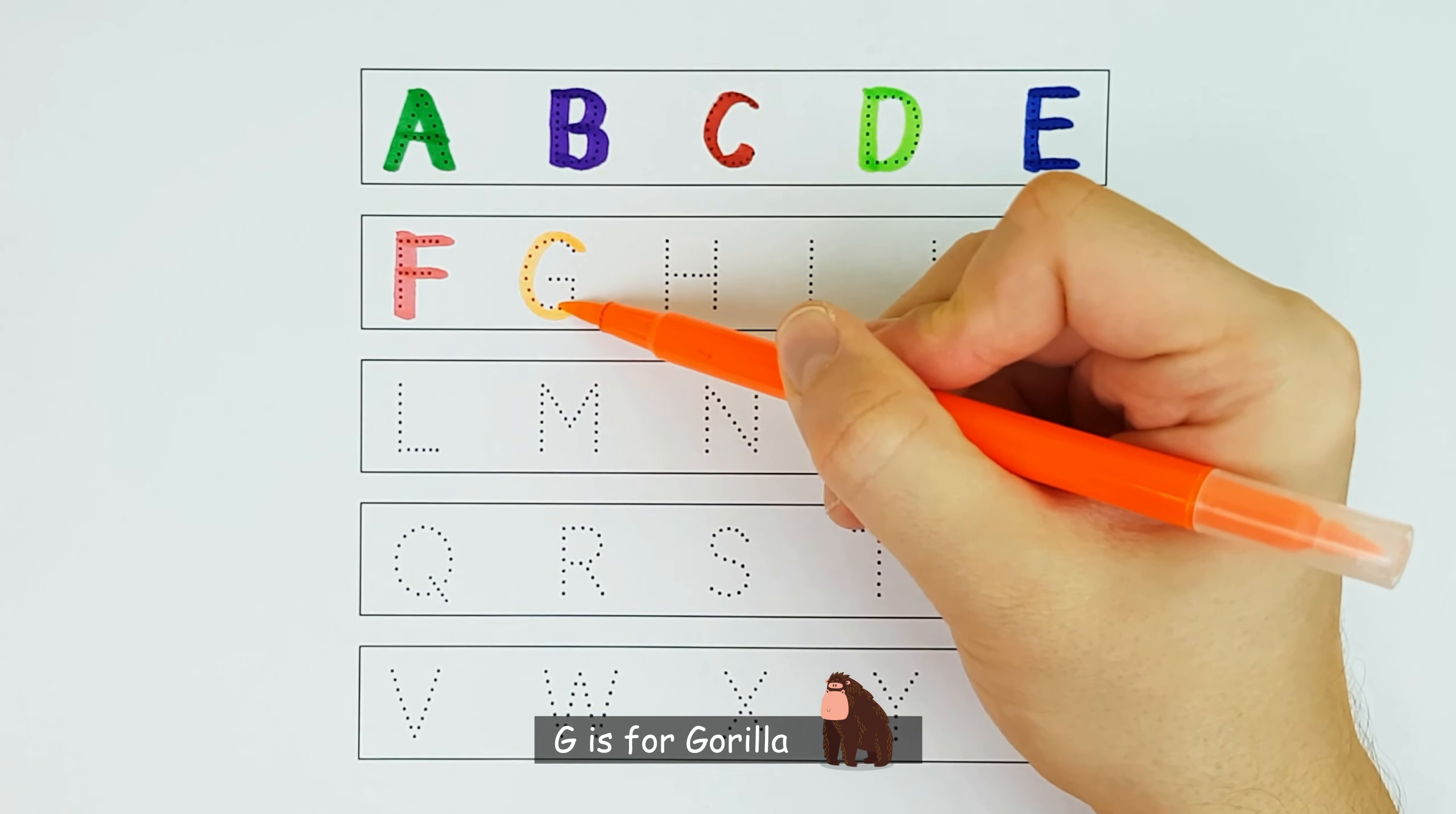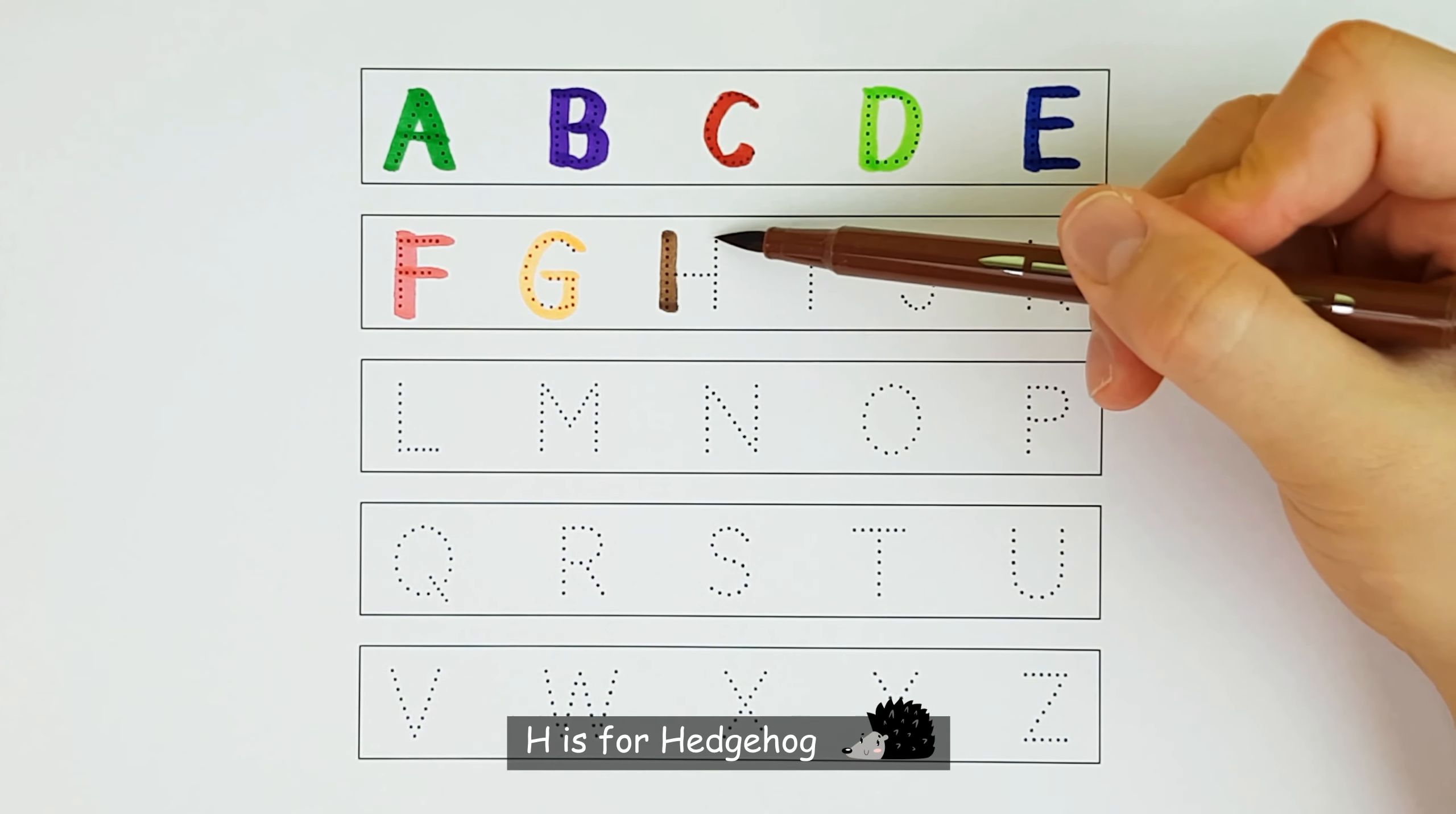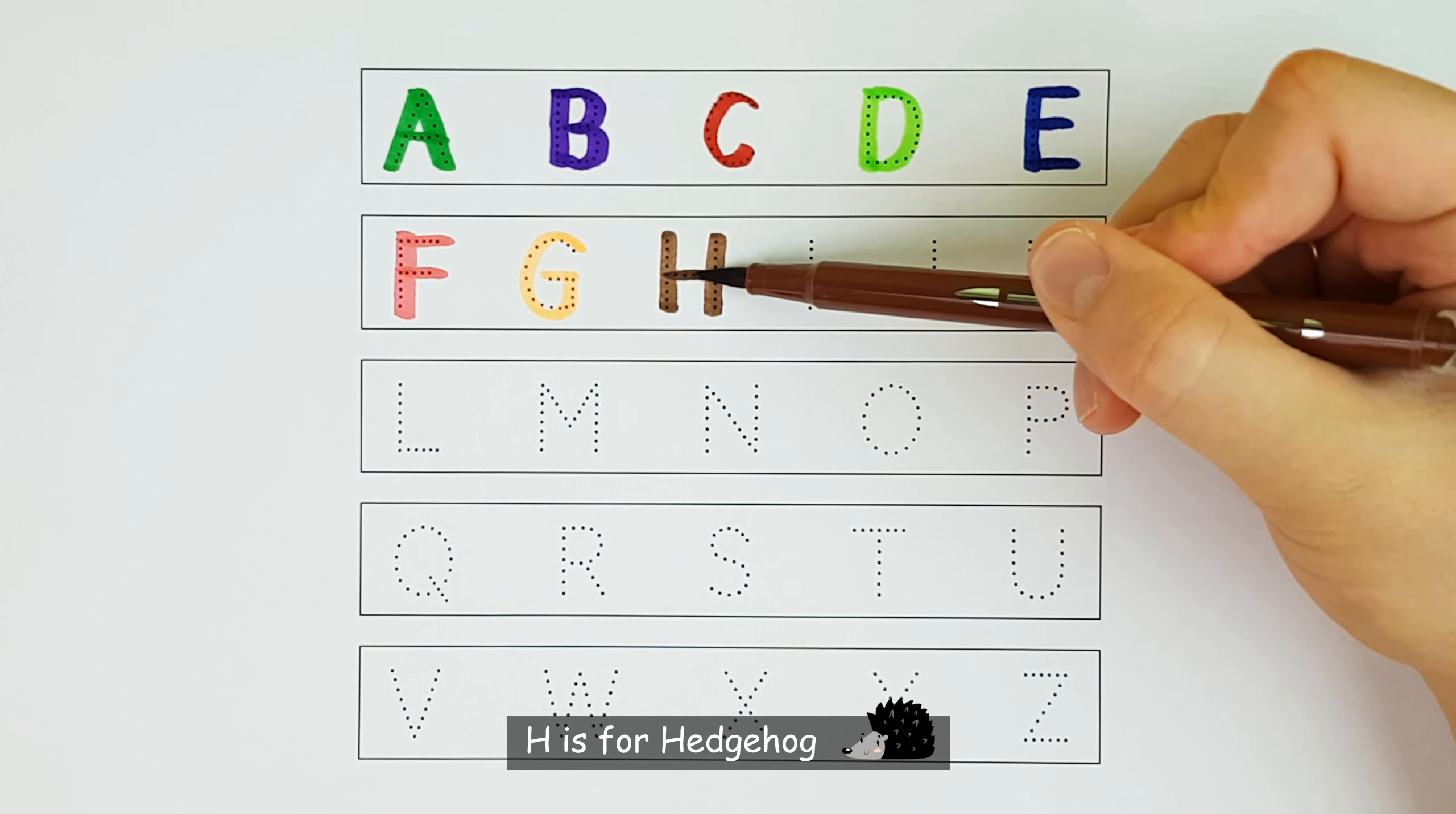G. G is for gorilla. G. H. H is for hedgehog. H.